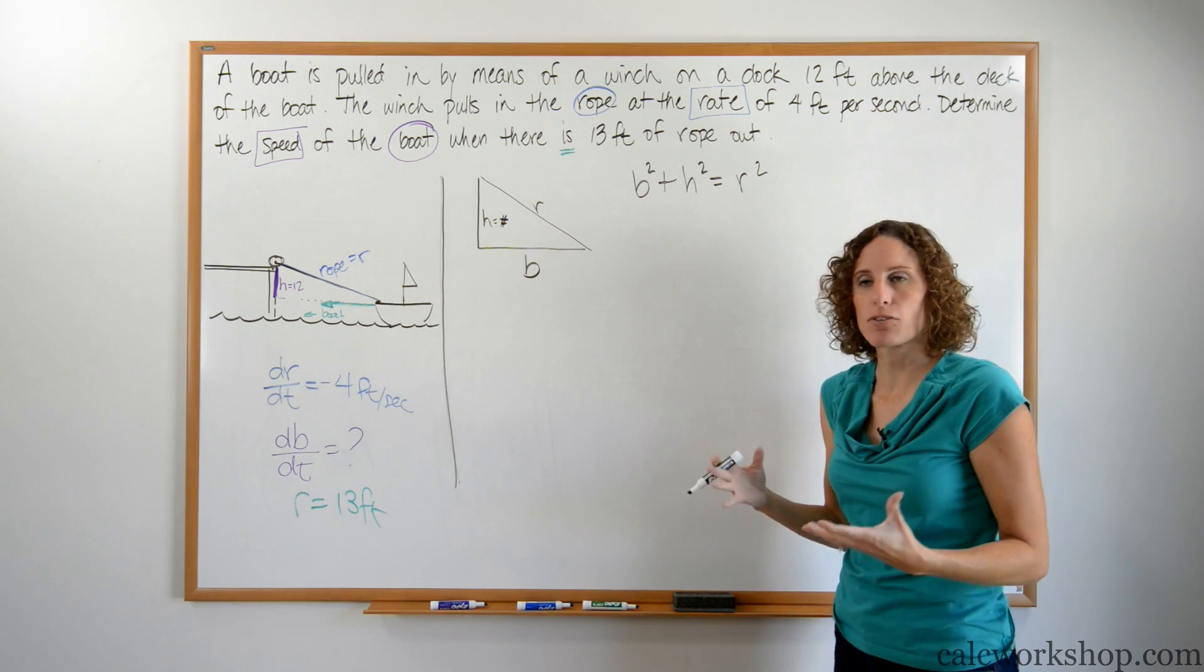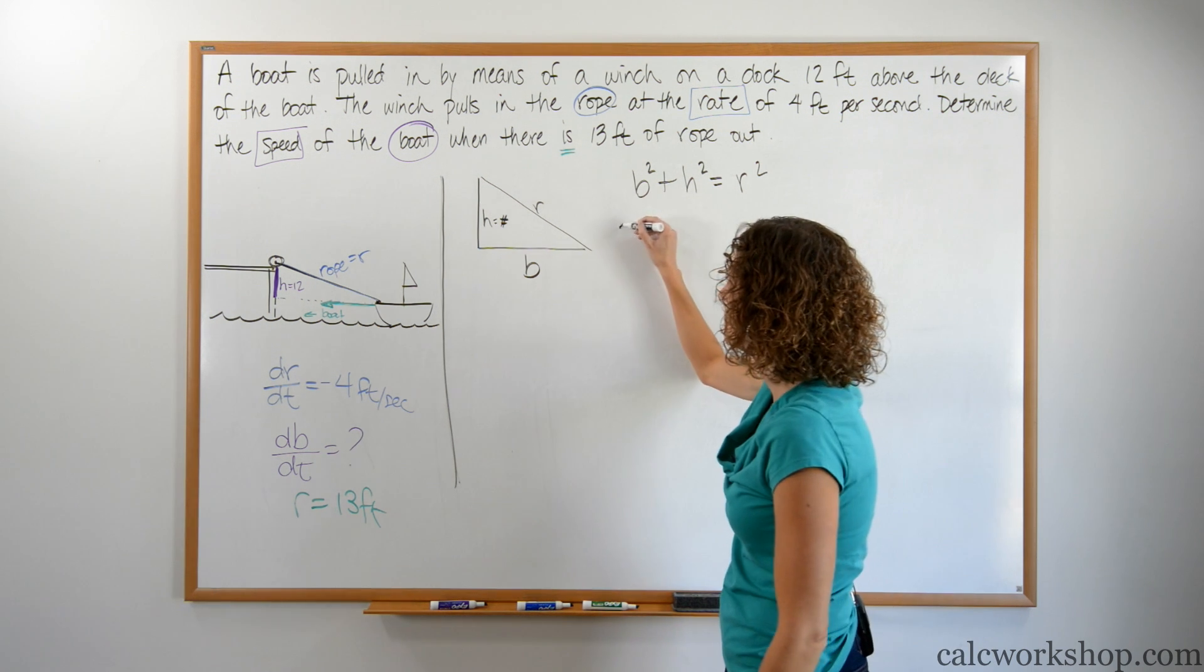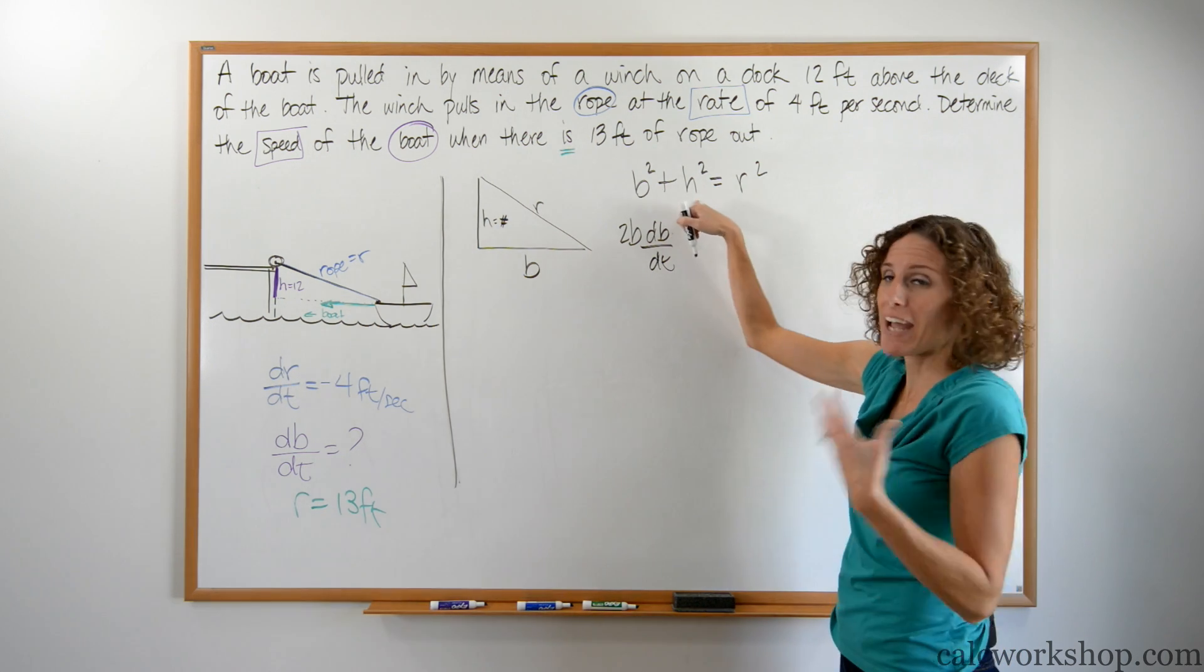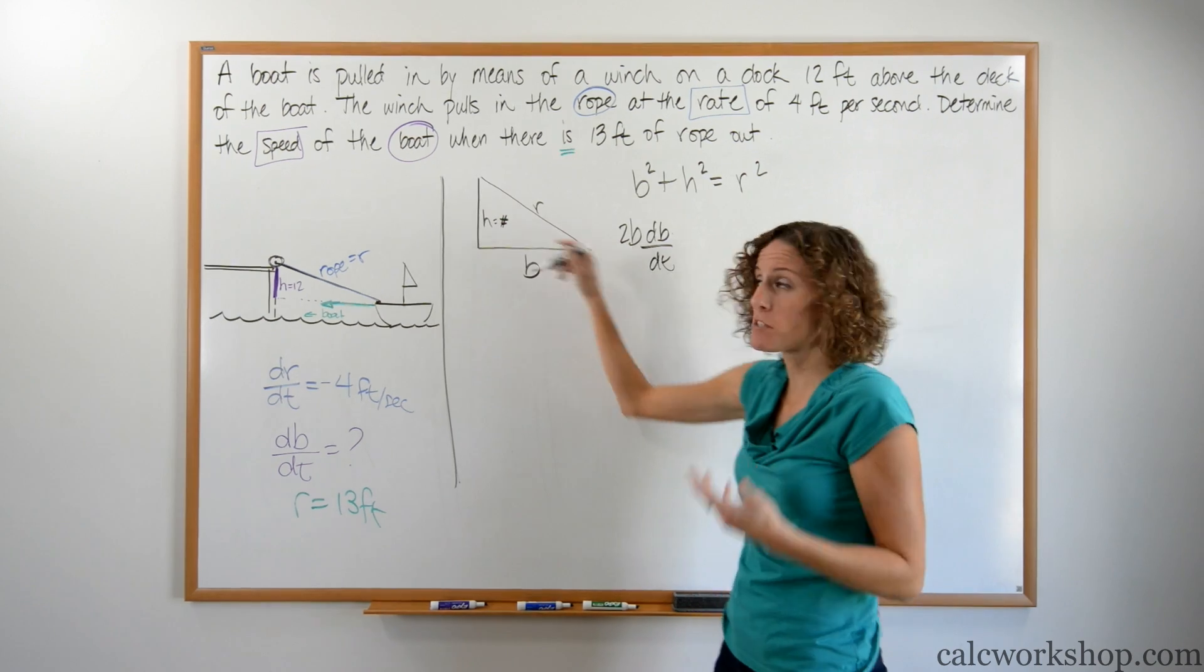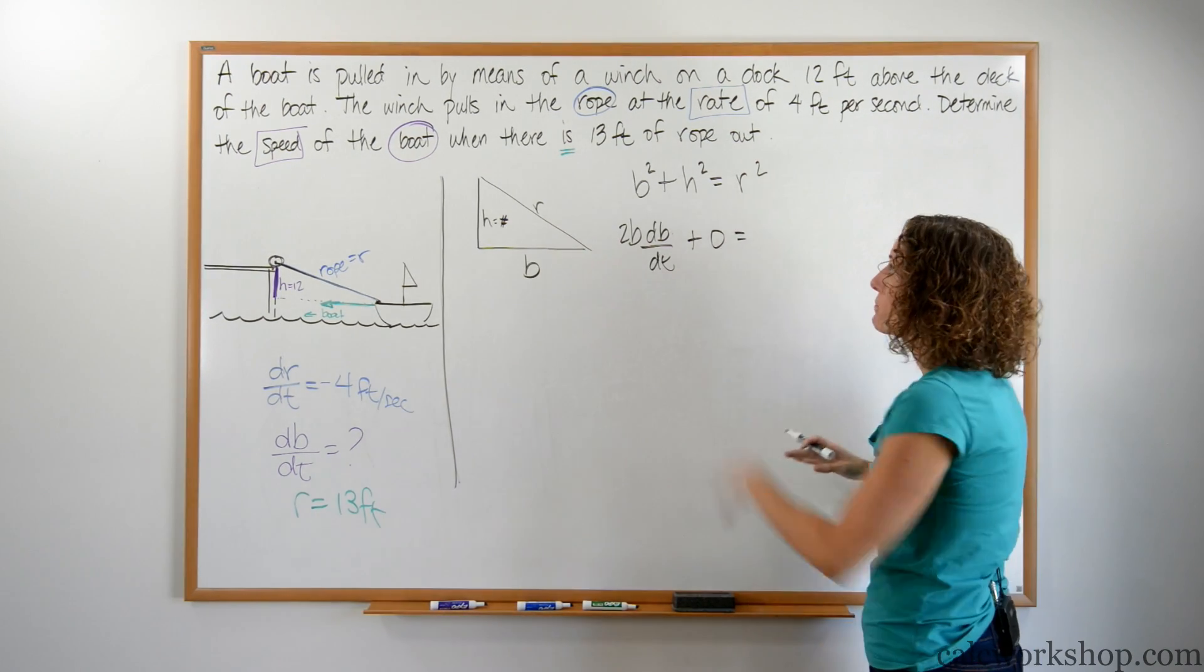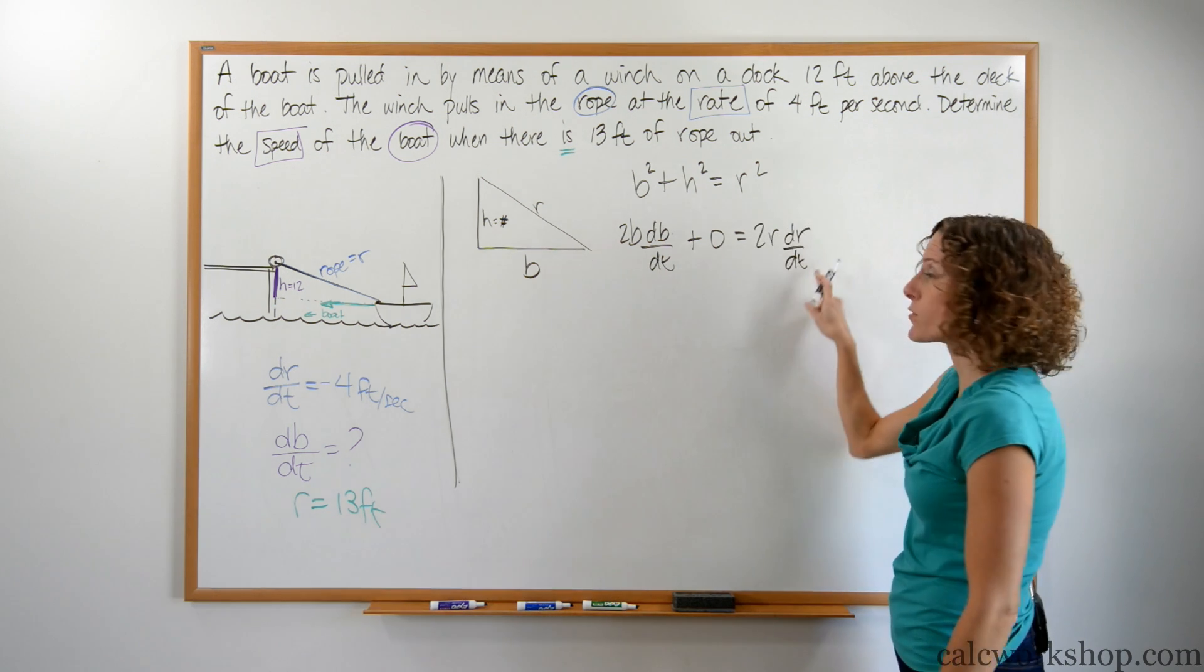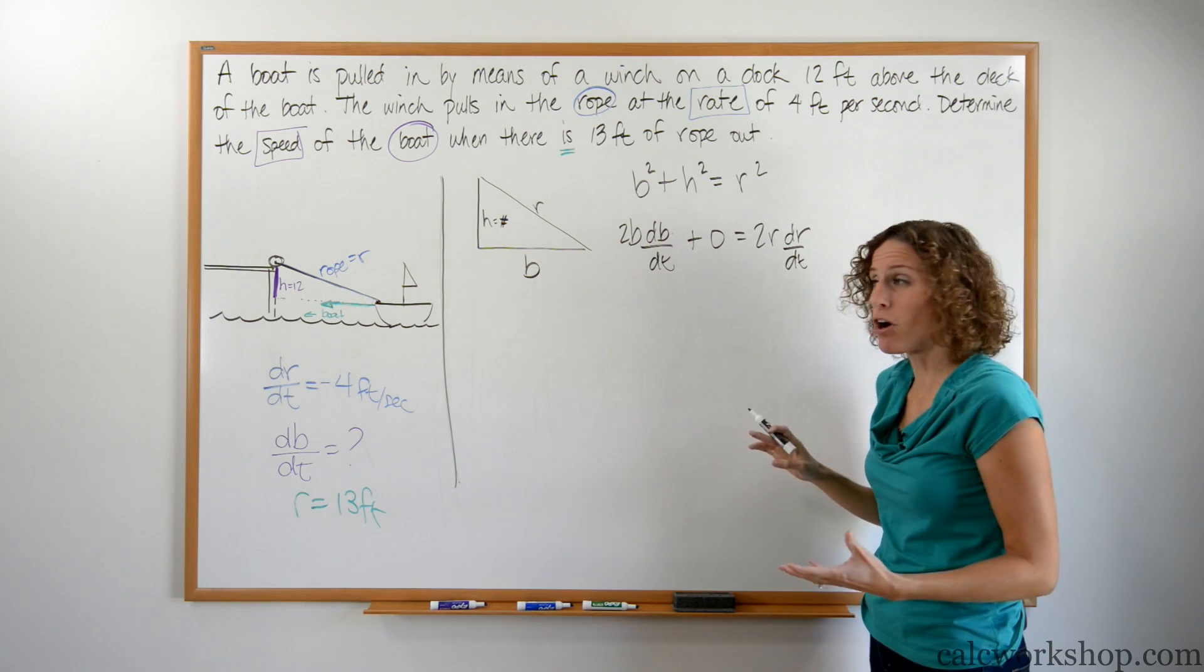Now that we've created an equation that relates everything into one expression, let's take a derivative. The derivative of b squared would be 2b db/dt. H is just a number, so the derivative of a number is zero. We can say plus zero or just not write it at all. R squared, the derivative of r squared would be 2r dr/dt, the derivative of the rope with respect to time.